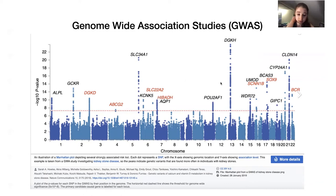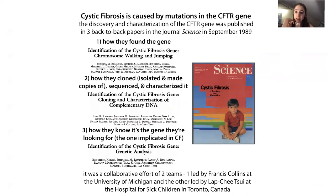Sometimes GWAS results can reflect shared ancestry rather than actual causation, but sometimes they lead you to look closer at what's around the associated SNP to find the true cause. A classic example of traditional genetic mapping is finding the CFTR gene — the mutation that causes cystic fibrosis. It took a lot of work and was a collaborative effort between two teams.